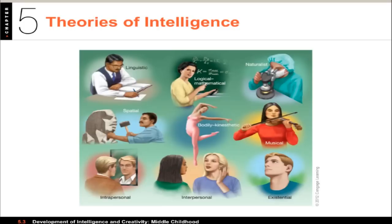Robert Sternberg had a tripartite theory of intelligence defined as analytical intelligence — the basic science and math kind of thing — creative intelligence, the ability to make new things, and practical intelligence, which is very much in the real world.